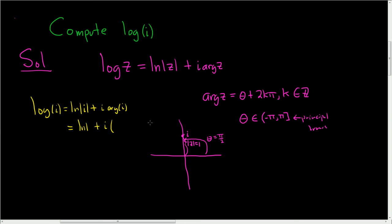And the argument of i, well, we said that theta was pi over 2. That's the principal value of the argument, so pi over 2, plus 2k pi.